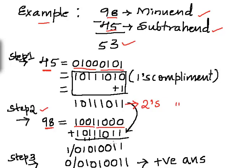Adding 10011000 and 10111011: 0 plus 1 is 1, 0 plus 1 is 1, 0 plus 0 is 0, 1 plus 1 is 2 — written as 10, where 0 is the sum and 1 is the carry. Then 1 plus 1 plus 1 is 3, written as 11 where 1 is sum and 1 is carry. Then 1 plus 1 plus 0 is 10 where 0 is sum and 1 is carry. 0 plus 0 plus 1 is 1. Then 1 plus 1 is 10 where 0 is sum and 1 is carry — a carry is generated.